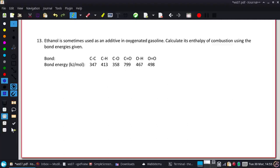All right, we're looking at number 13. Ethanol is used as an additive in oxygenated gasoline. We want to calculate its enthalpy of combustion using the bond energies. Enthalpy of combustion tells us what we want to do with this ethanol. It means we're going to combust it.